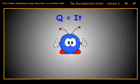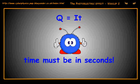By rearranging the equation, we get that the charge is equal to the current multiplied by the time it was flowing. Don't forget that the time must be in seconds.